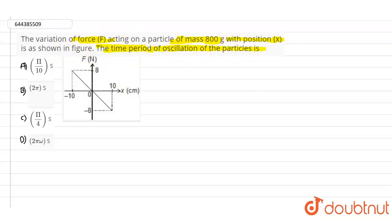Here we need to find out the value of the time period of oscillations of this particular particle. If you look into this particular graph which is drawn between the force and the position represented in x in centimeters, out of this we need to find out the value of the time period of oscillation of that particular particle.